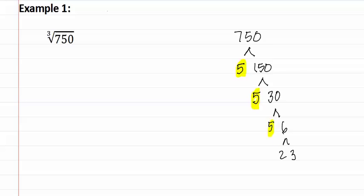Once we have all the prime numbers, we can then write out the prime factorization underneath the radical, which is two times three times five to the third. Writing them in order keeps us organized.